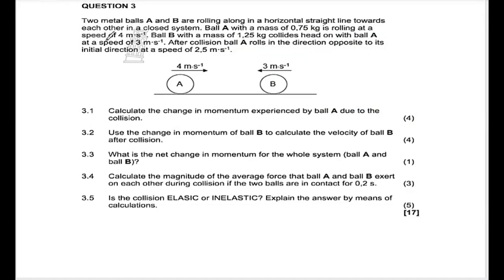We are on momentum and impulse, and we are given question three. It says two metal balls A and B are rolling along a horizontal straight line towards each other in a closed system. Ball A with a mass of 0.75 kg is rolling at a speed of four meters per second. Ball B with a mass of 1.25 kg collides head-on with ball A at a speed of three meters per second. After the collision, ball A rolls in the direction opposite to its initial direction at a speed of 2.5 meters per second.